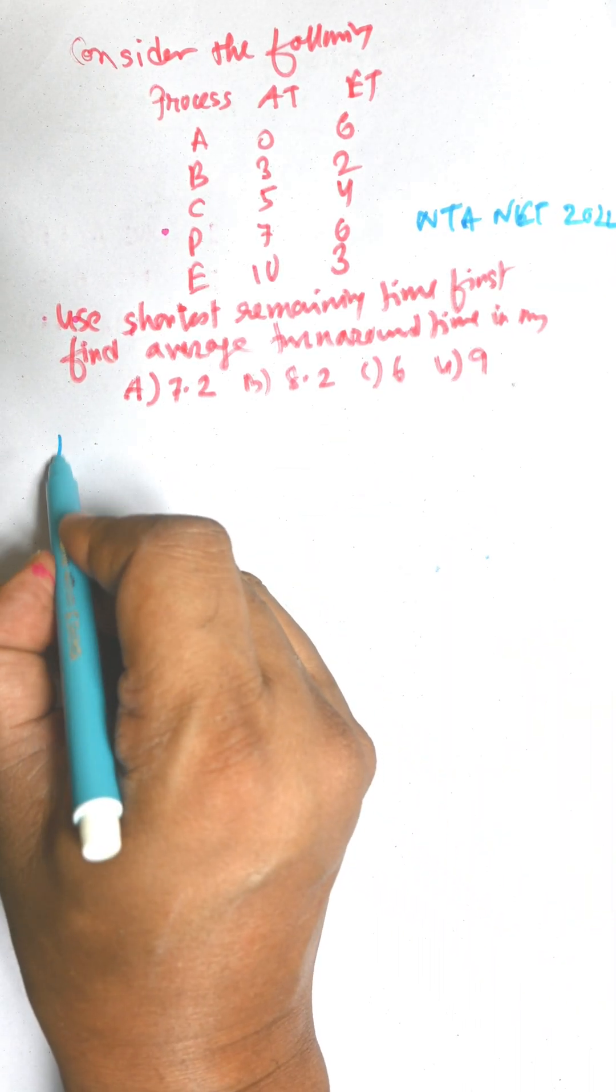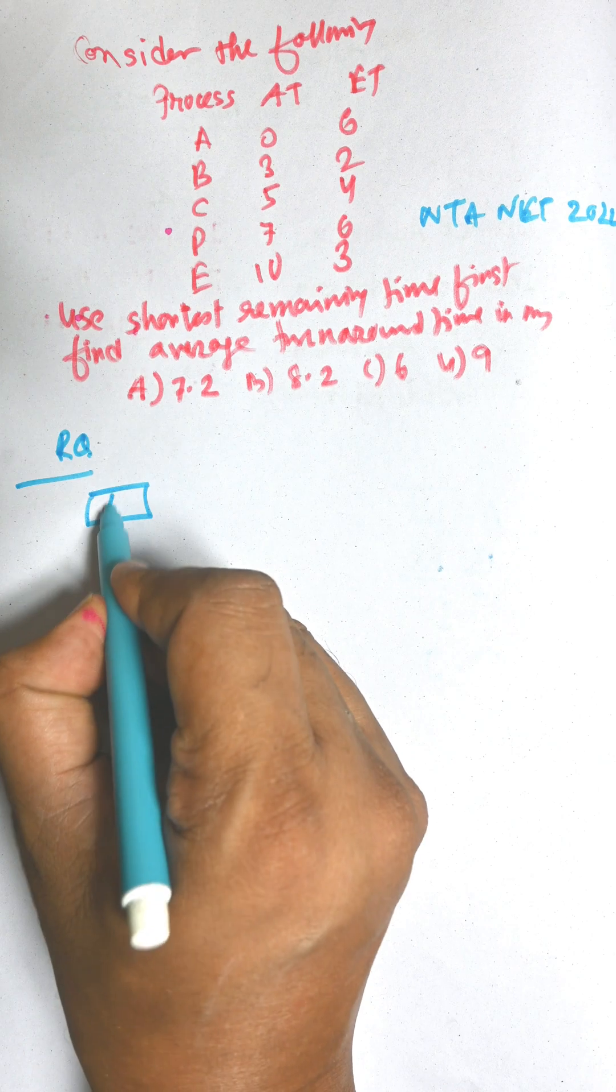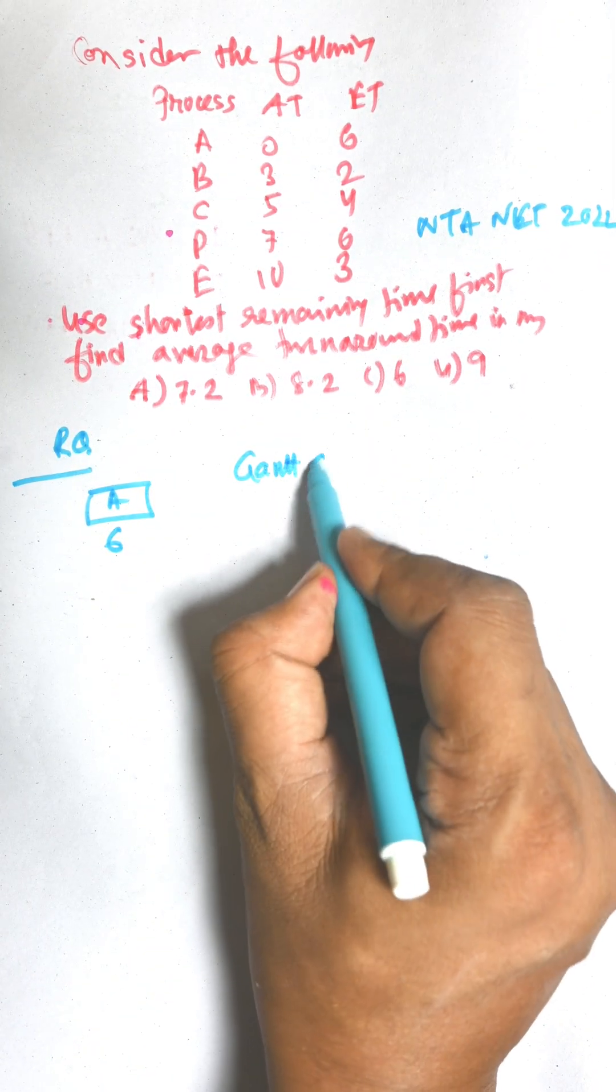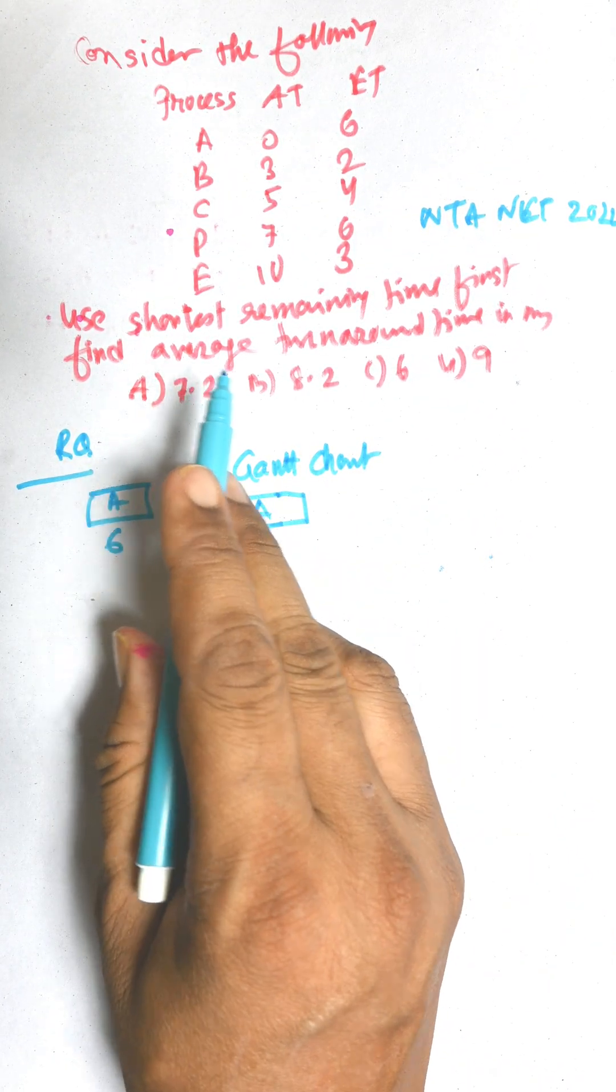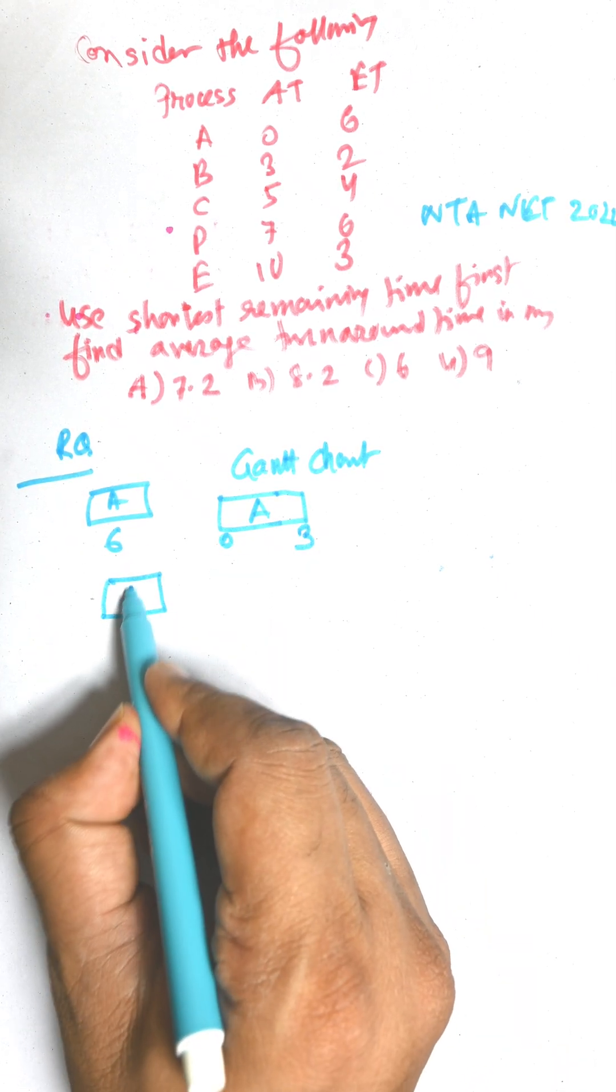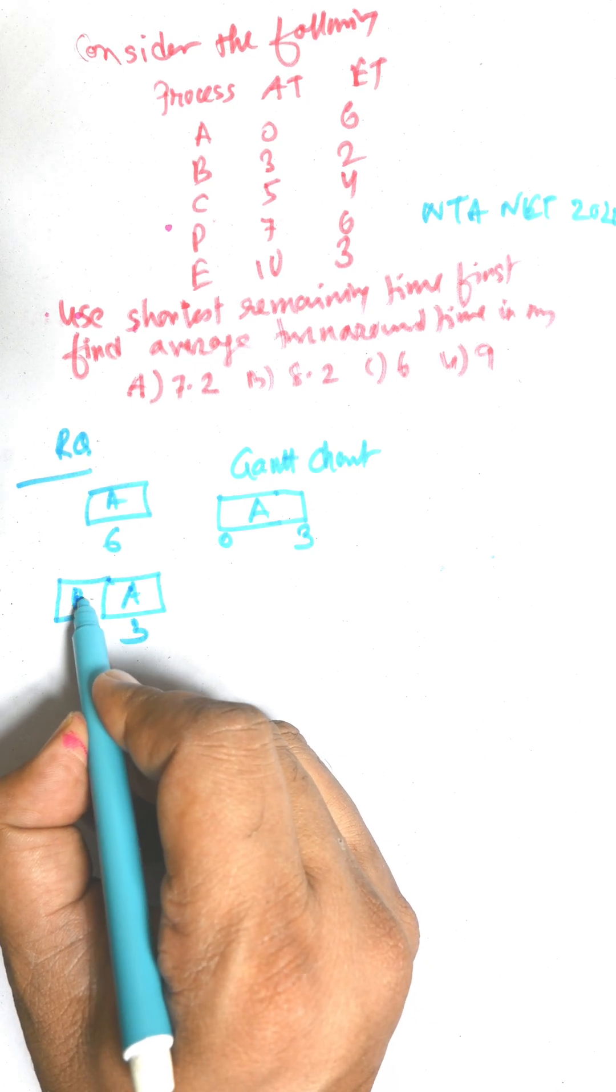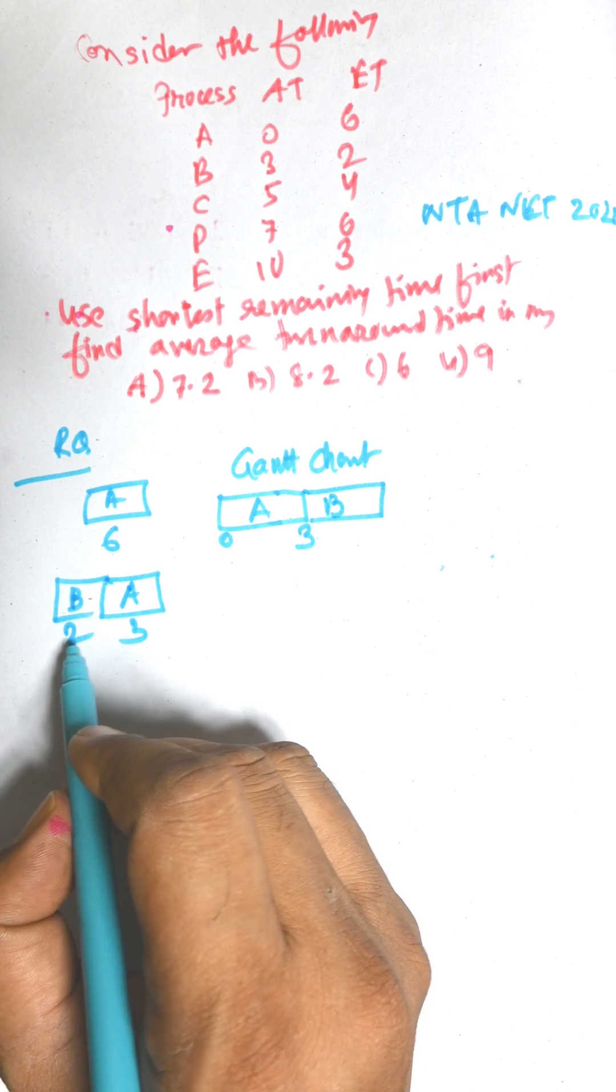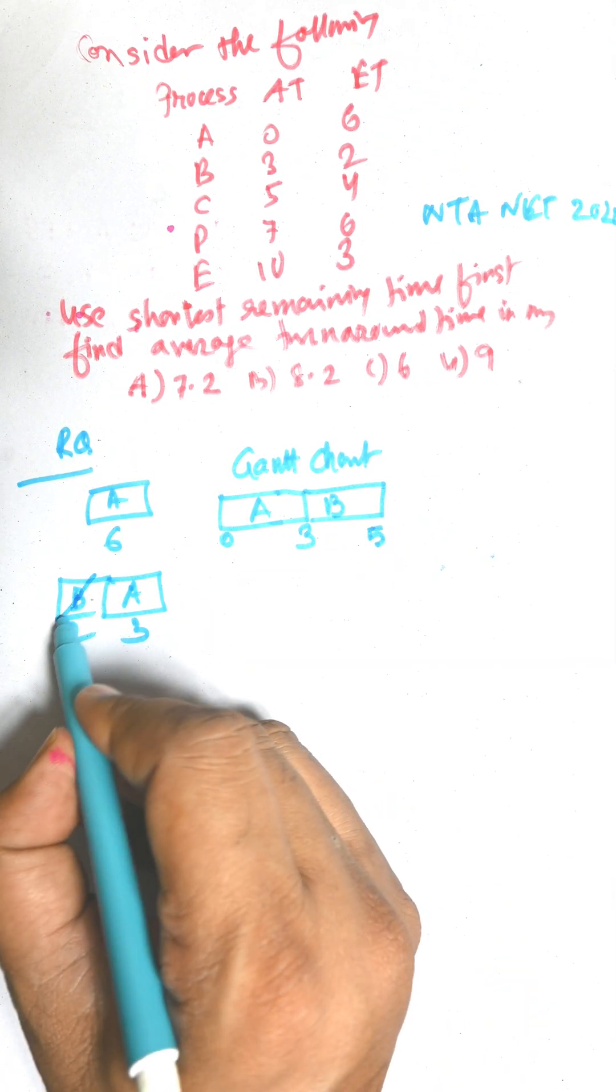First of all, we need to draw the ready queue. Here process A arrives first and the execution time is 6. A will start its execution until the next one arrives, up to 3, then B arrives. Now, remaining time of A is 3 and remaining time of B is 2. According to rule, B will be executed depending on the shortest remaining time.